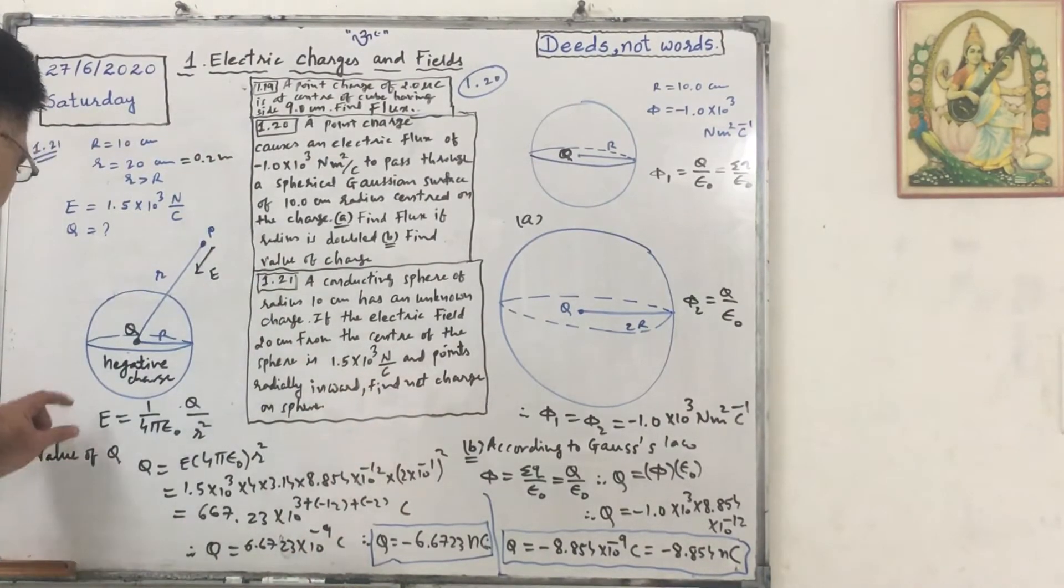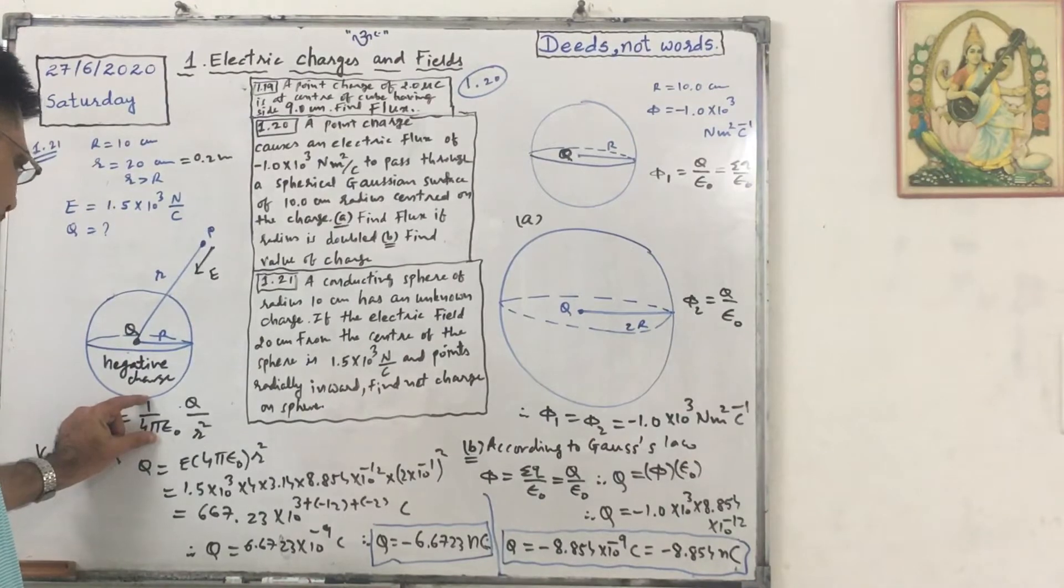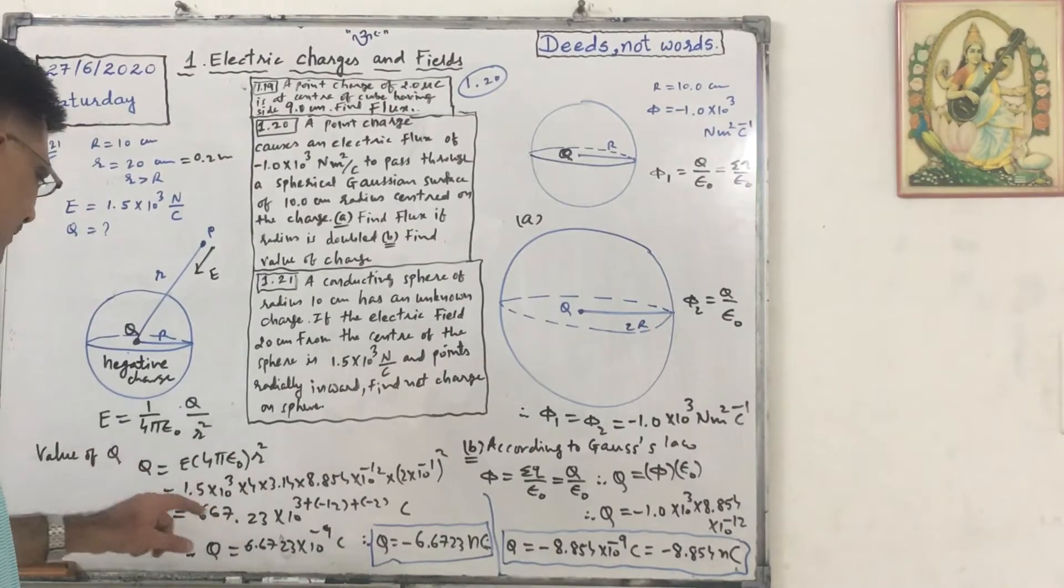We know that E equals 1 upon 4 pi epsilon naught Q upon R square. So Q will be equal to E into 4 pi epsilon naught R square. Put in the values.